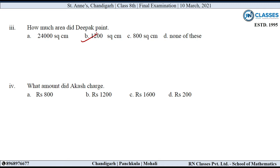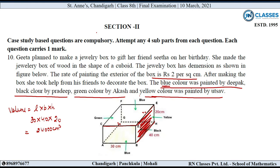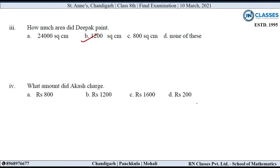Fourth sub-question: What amount did Akash charge? Akash ने green color से paint किया। Green color वाला surface — इसका area उसके सामने वाले surface जितना ही है, यानी 800 cm². Charges: 1 cm² को paint करने के 2 rupees, तो 800 into 2 = rupees 1600. So option C is correct.